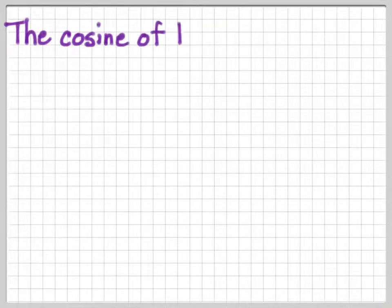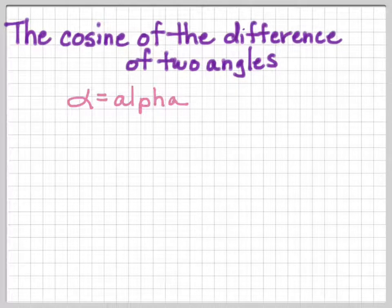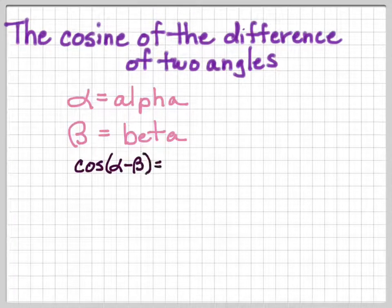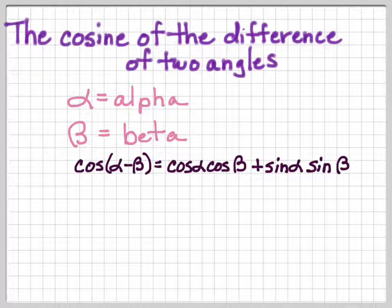So let's talk about the cosine of the difference of two angles. We're going to be talking about alpha, which is this funny-looking little fish guy, and beta, which is like a big old fat capital script B. And we're going to look at the difference of alpha and beta, which would be alpha minus beta, and we're looking at the cosine. And here's what the formula is.